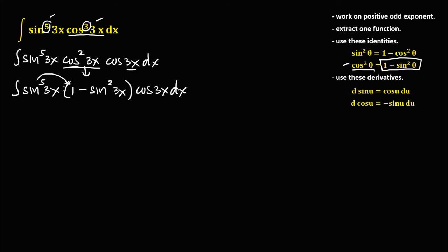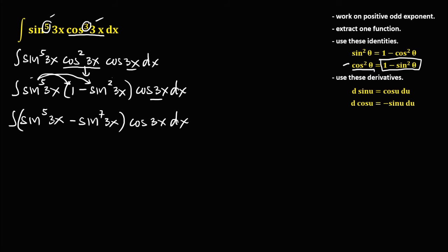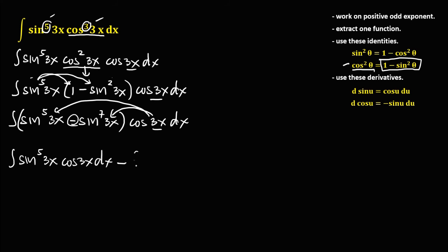Distributing sin⁵(3x): the first term is sin⁵(3x), and adding exponents 5 + 2 gives the second term as negative sin⁷(3x). So we have the integral of sin⁵(3x) · cos(3x) dx minus the integral of sin⁷(3x) · cos(3x) dx.